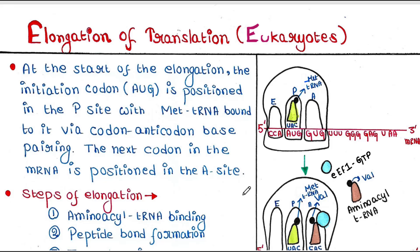Let's talk about the elongation of eukaryotic translation. This is our ribosome. This is our mRNA, and the ribosome has three sites or three pockets: A, P, and E.